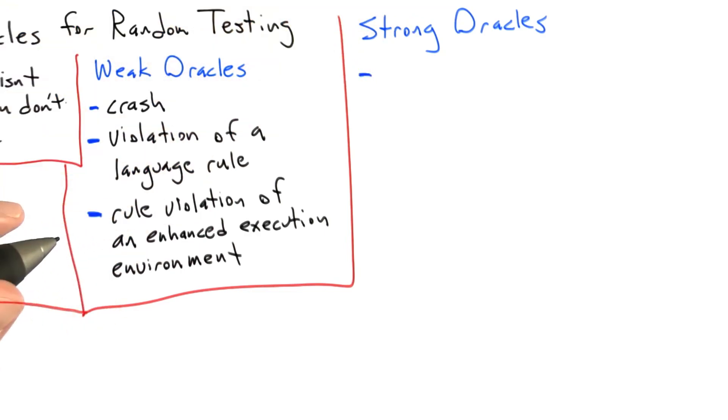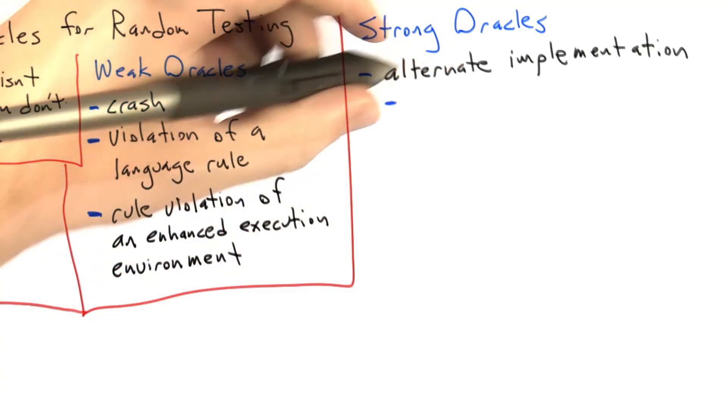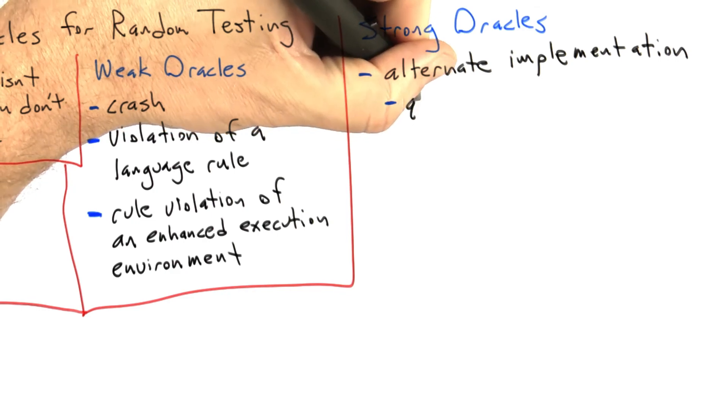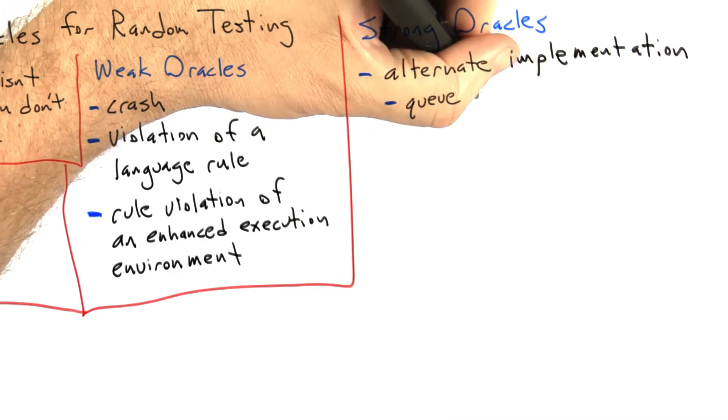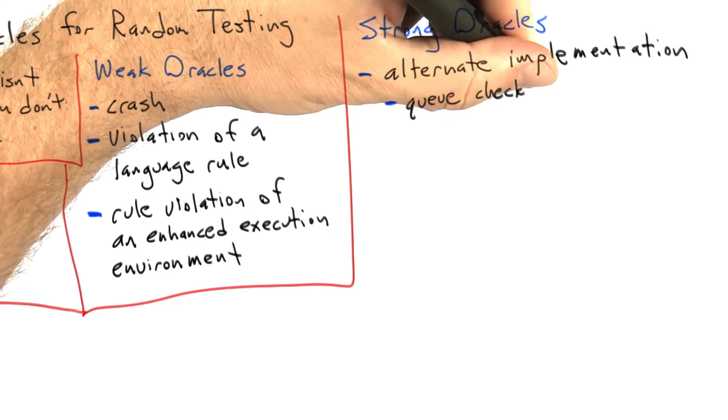Let's start off with one of the important ones, which is having an alternate implementation of the same specification. If you think about it, this is what my random tester for the bounded queue did, and perhaps what yours also did.